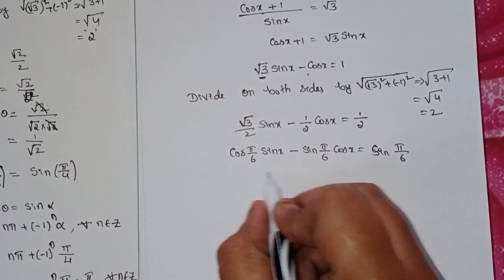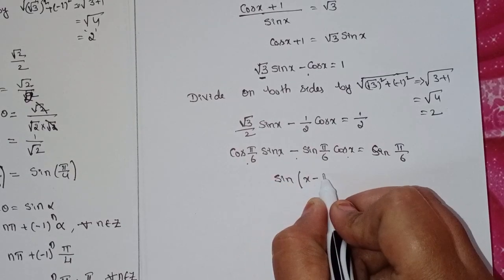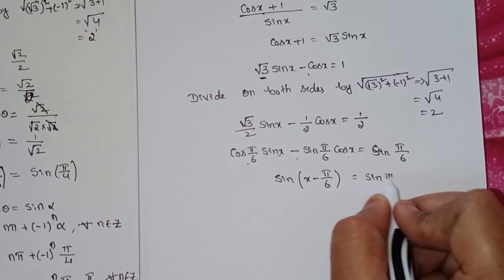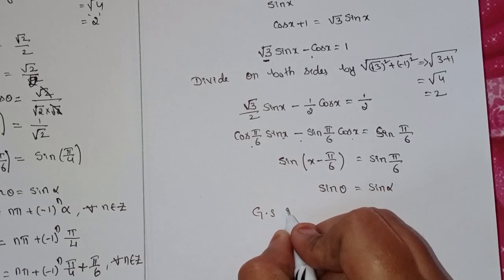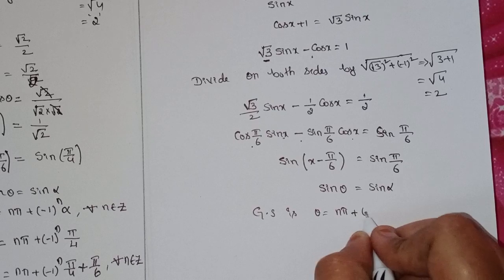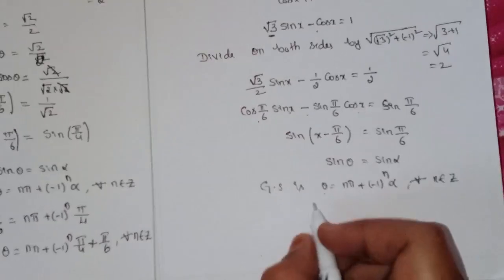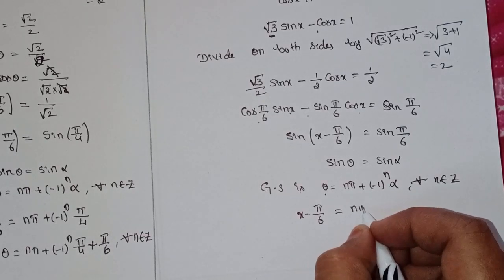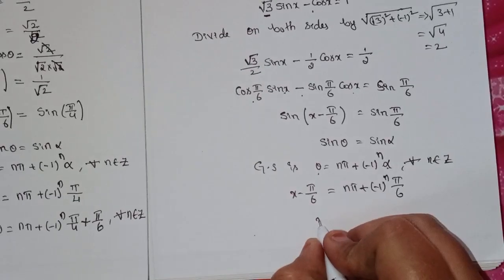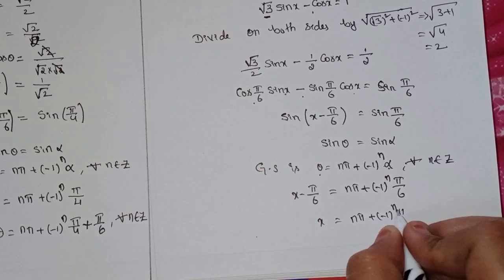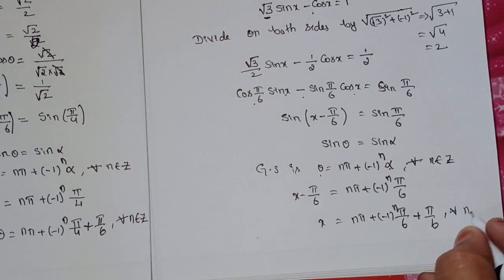Using the formula sin a·cos b − cos a·sin b = sin(a − b), we get sin(x − π/6) = sin(π/6). Applying the general solution sinθ = sinα → θ = nπ + (−1)ⁿ·α: x − π/6 = nπ + (−1)ⁿ·(π/6), so x = nπ + (−1)ⁿ·(π/6) + π/6 for all n ∈ ℤ.